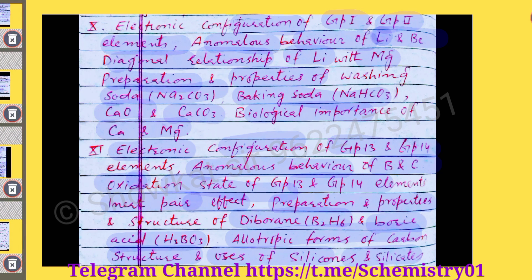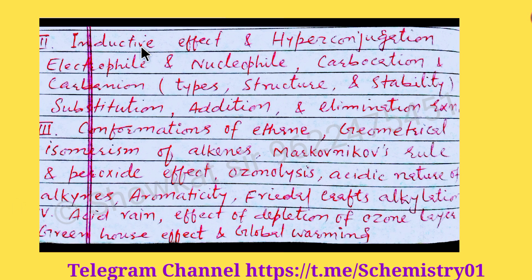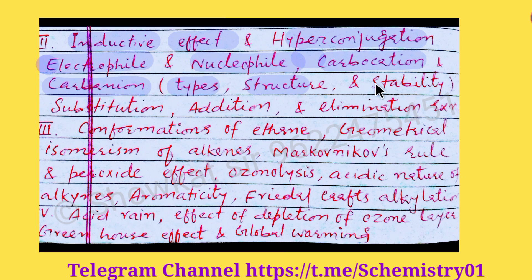The next chapters are Organic Chemistry: Some Basic Principles and Techniques. Here you will study the electronic effects like the inductive effect and hyperconjugation, and also what are electrophiles and nucleophiles. Then the reaction intermediates — we have carbocations and carbanions. You should be able to write the types of carbocations and carbanions, the structure of these reaction intermediates, and their stability. Then you will study reactions: substitution reactions, addition reactions, elimination reactions, and their types — with examples.